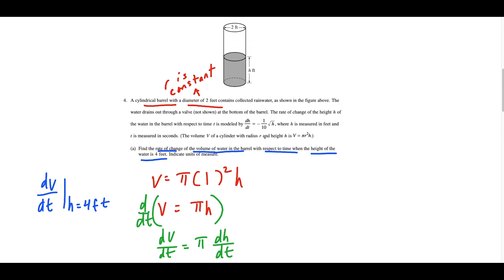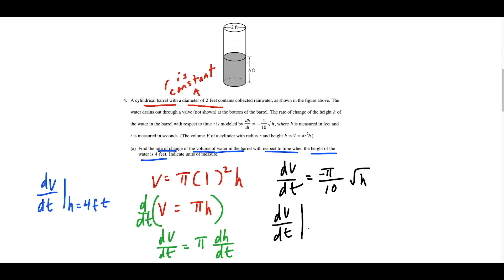Now we use the equation they gave us for dh/dt. That gives us dV/dt equals π times negative 1 over 10 times square root of h, which we write as negative π over 10 times √h. Then we plug in h equals 4 feet: the square root of 4 is 2, and 2 over 10 simplifies to 1/5, giving us negative π over 5.